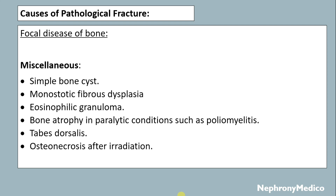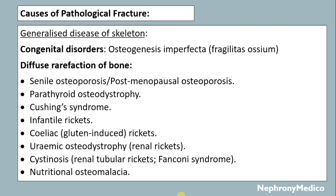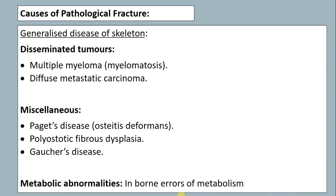Miscellaneous diseases include simple bone cyst, monostatic fibrous dysplasia, eosinophilic granuloma, bone atrophy in paralytic conditions such as post-poliomyelitis, tabes dorsalis, osteonecrosis after irradiation, or generalized diseases of the skeleton like congenital disorders including osteogenesis imperfecta, or diffuse rarefaction of the bone like senile osteoporosis or postmenopausal osteoporosis, parathyroid osteodystrophy, Cushing's syndrome, infantile rickets, celiac rickets, uremic osteodystrophy, cystinosis, nutritional osteomalacia, or disseminated tumors like multiple myeloma and diffuse metastatic carcinoma, or miscellaneous diseases like Paget's disease, polyostatic fibrous dysplasia, Gaucher's disease, and metabolic abnormalities like inborn errors of metabolism.